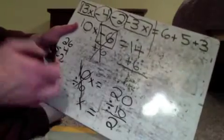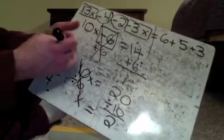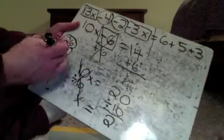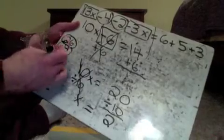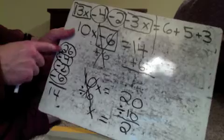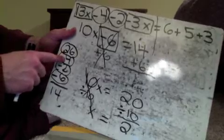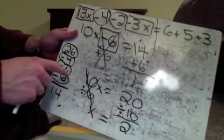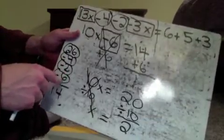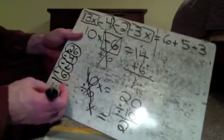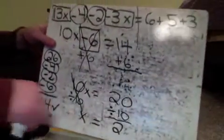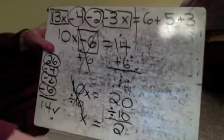26 is positive, so I've got negative 4, negative 2, negative 6. I know that 26 minus 4 is 22. Minus 2 is going to be 20, and minus 6 more is going to be 14. Since that checked out, x does equal 2.